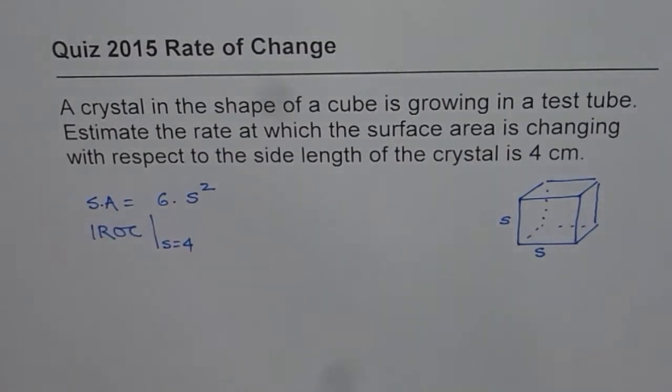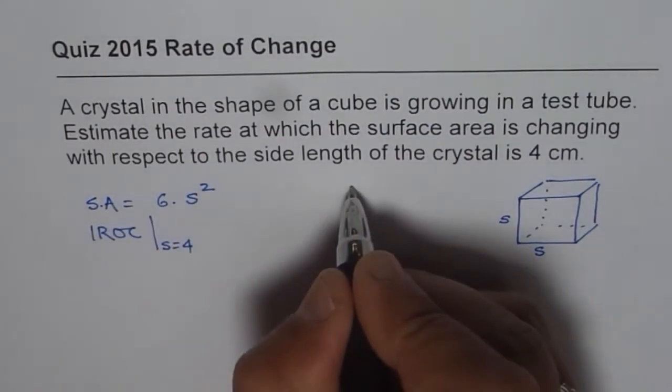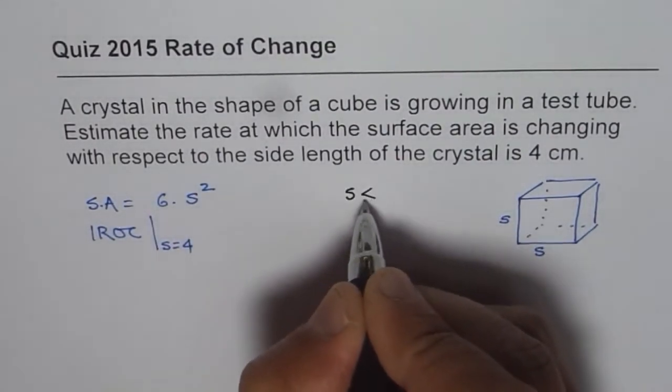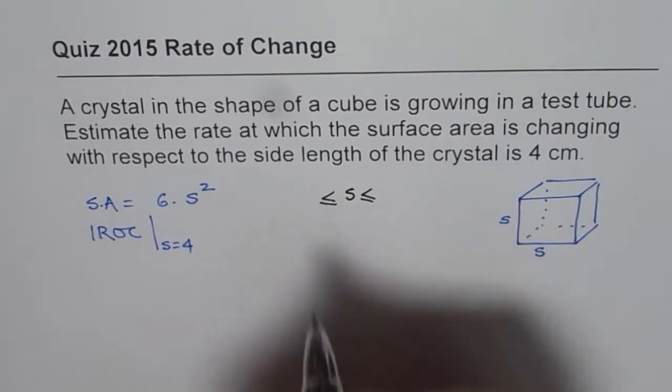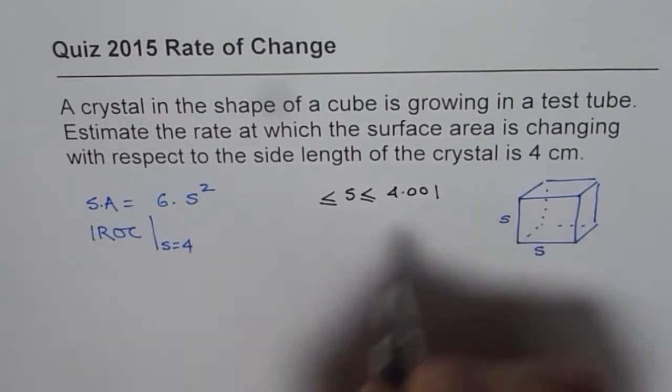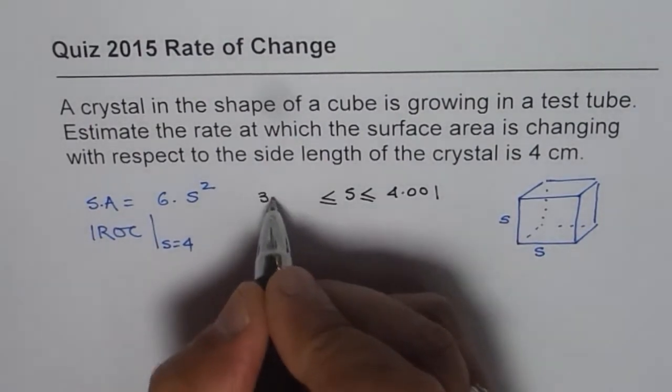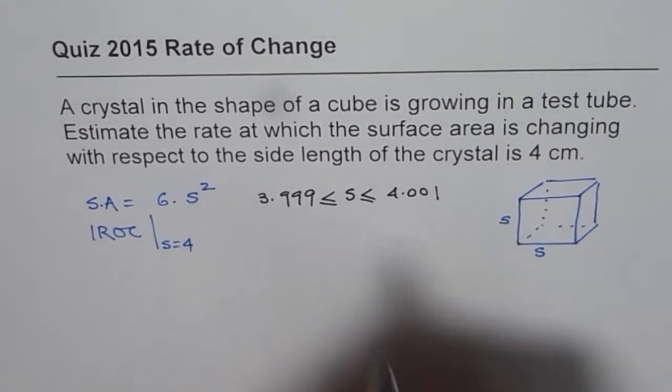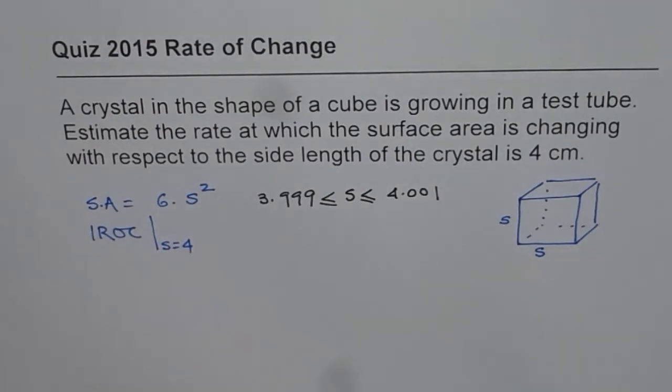So what we can do here is that we can take a centered interval, right? So we can in this formula take a centered interval where the side length could be between 4.001 and 3.999, right? And then calculate the answer.